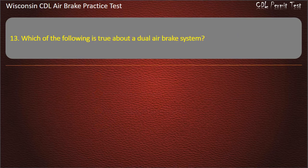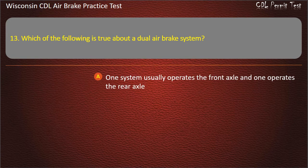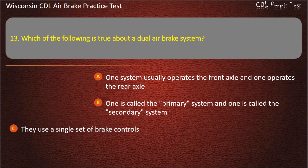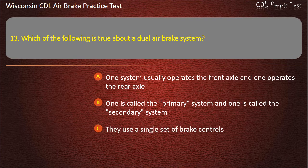Question 13. Which of the following is true about a dual-air brake system? One system usually operates the front axle and one operates the rear axle. One is called the primary system and one is called the secondary system. They use a single set of brake controls. All of the above. Answer: All of the above.